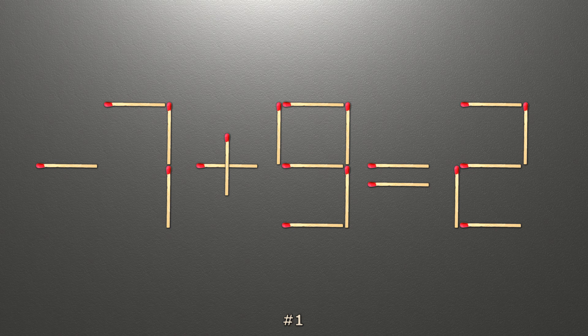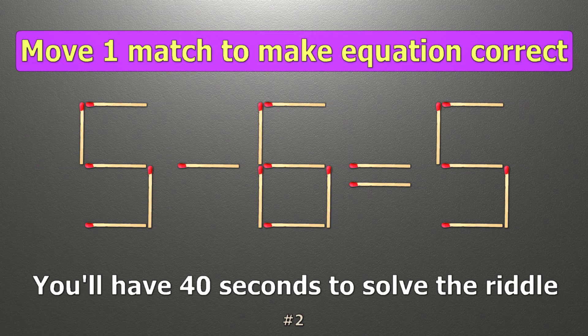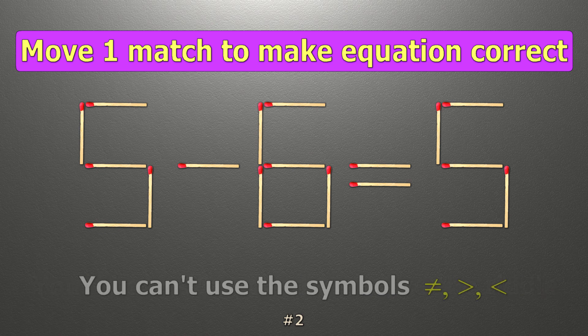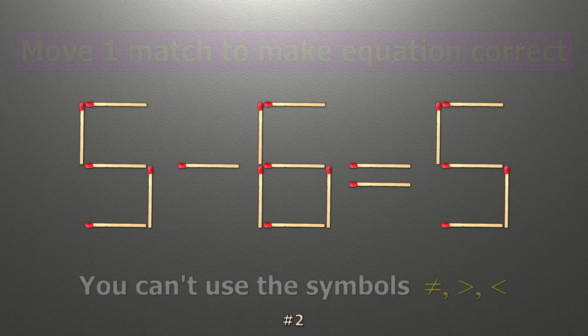Now our equality is correct. We have the equality 5 minus 6 equals 5. Our equality is wrong. We need to move one match to make our equality correct.